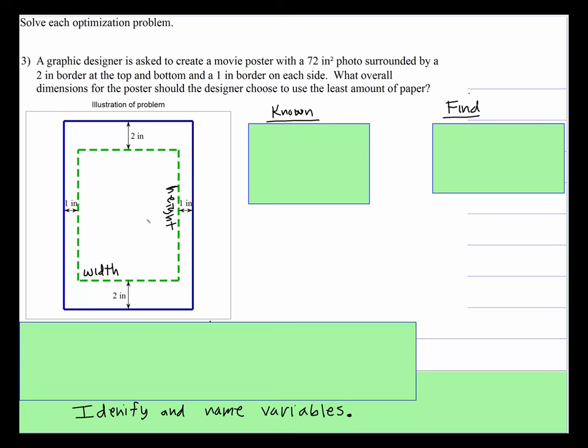So here is the process. We still need to draw a diagram. In this case the diagram is shown. Here's the overall movie poster, this outer piece, and this inside piece is the photo, the 72 inch squared area photo.